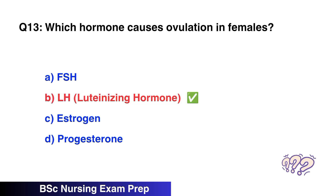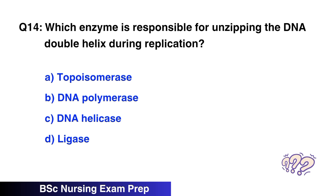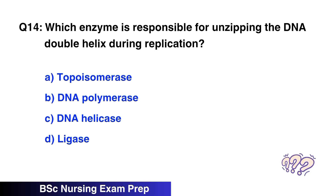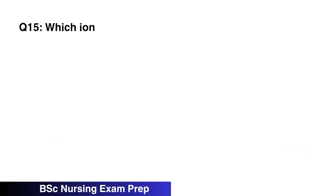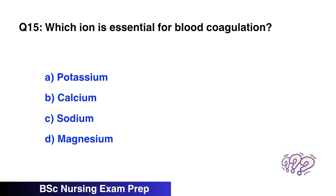Question number 13: Which hormone causes ovulation? The right option is B, LH. Question number 14: Which enzyme is responsible for unzipping the DNA double helix during replication? The right option is C, DNA helicase.